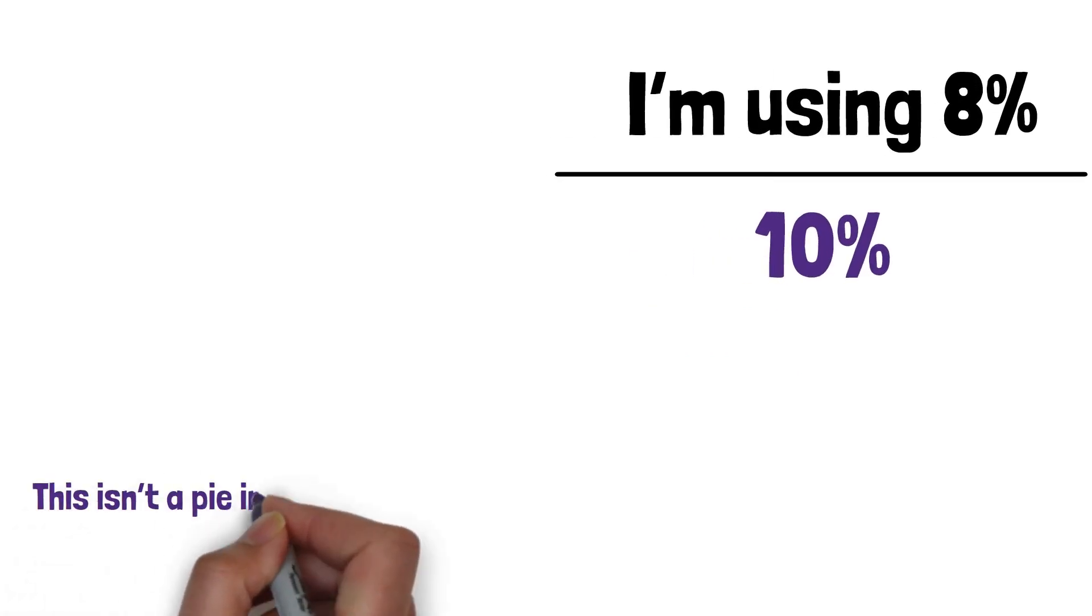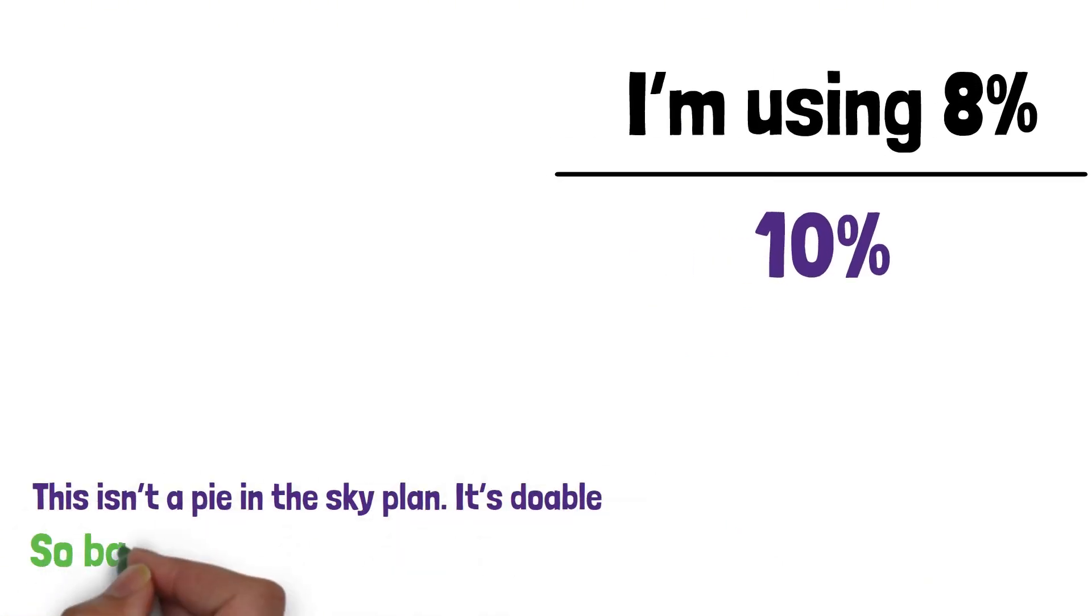I'm using 8% even though the stock market's long-term average return is 10% because I'm adjusting for inflation. This isn't a pie-in-the-sky plan, it's doable. So back to the math, the initial climb is brutal.